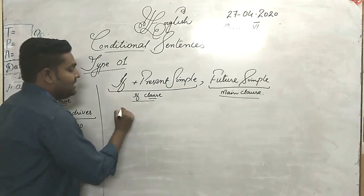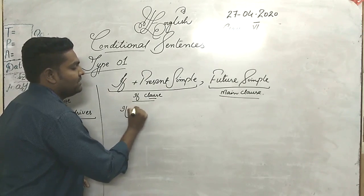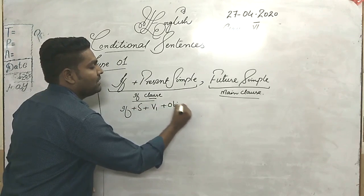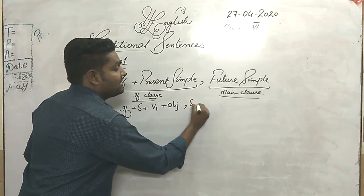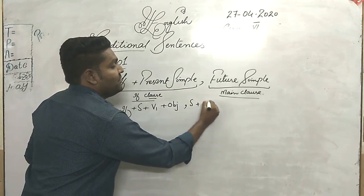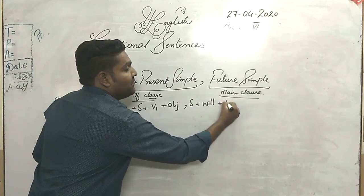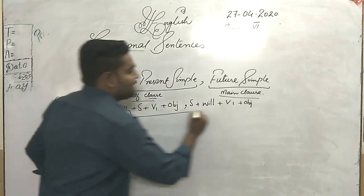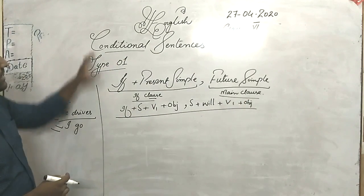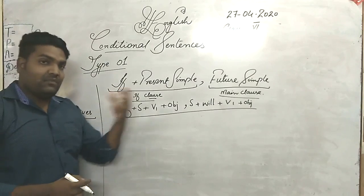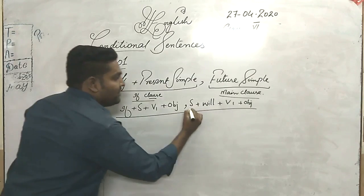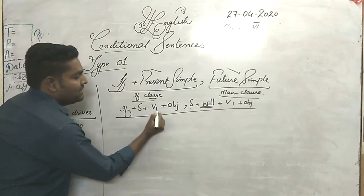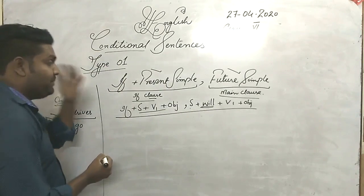Let me write down the formula for you. The structure is: subject + will + first form of verb + object. This is the structure of the sentence. By the help of this structure, we can make conditional type 1. In the main clause, we use future tense, and in the if clause, which is the present part, we use the first form of the verb as a present symbol.